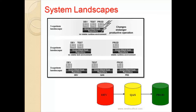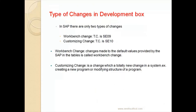Once the Blueprint is signed off, configuration is done in the Development system and all the data is saved in a Workbench Request to be transferred to the Production server. There are two types of changes in the Development box: Workbench changes and Customizing changes.